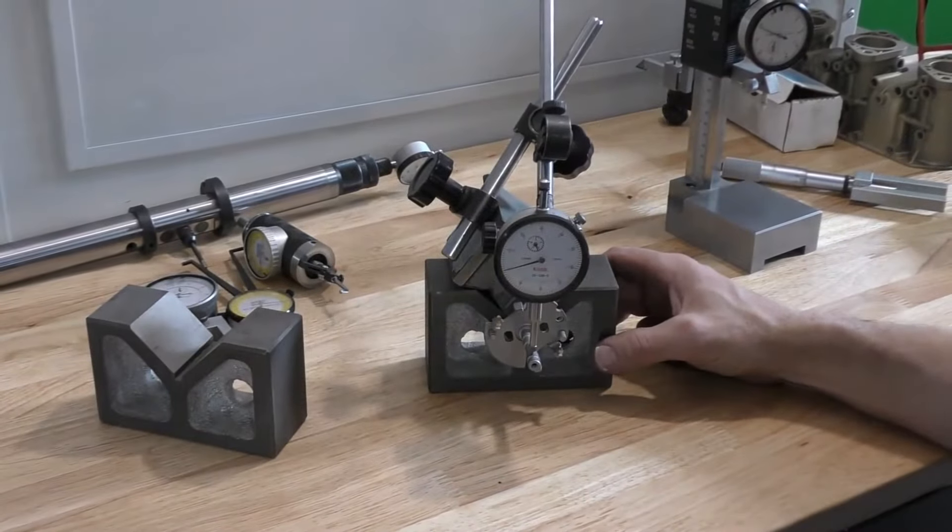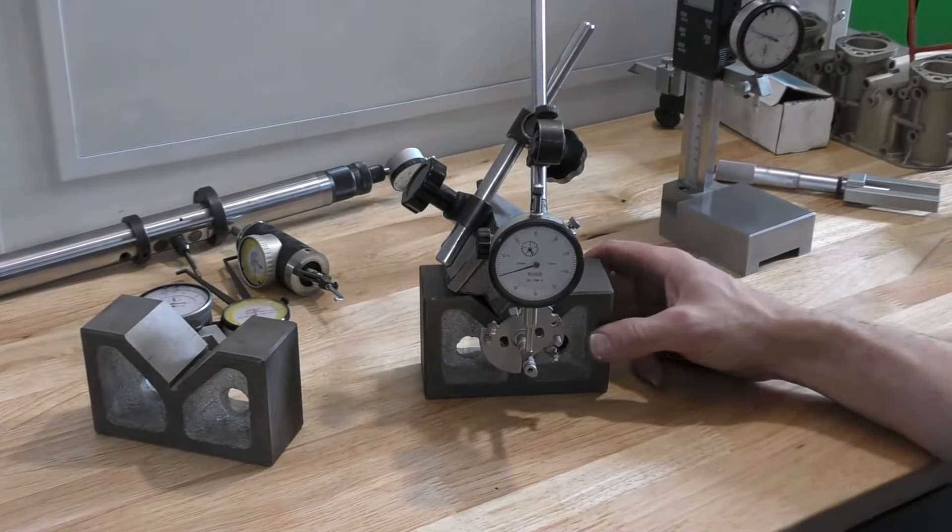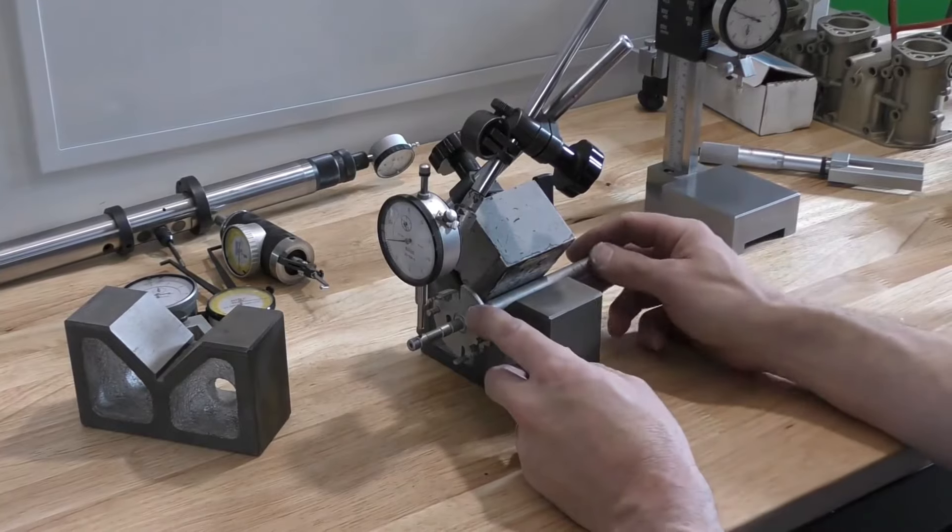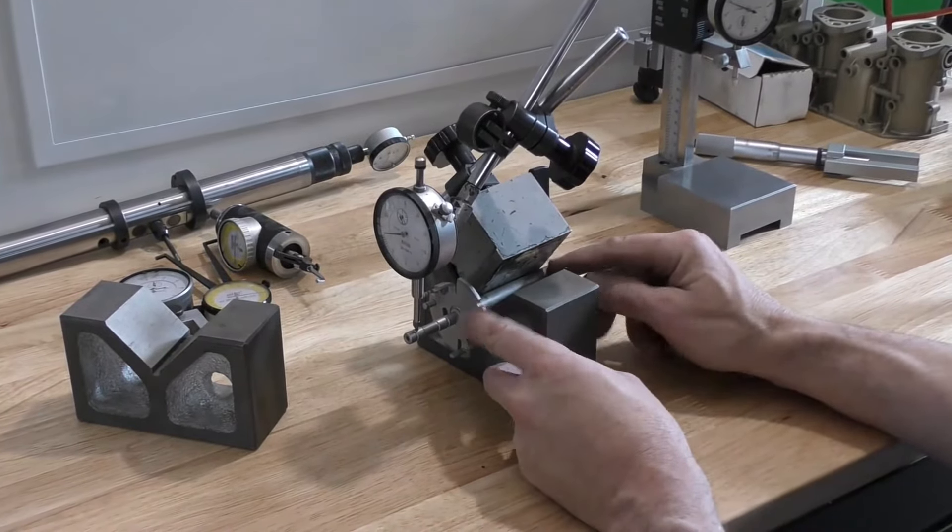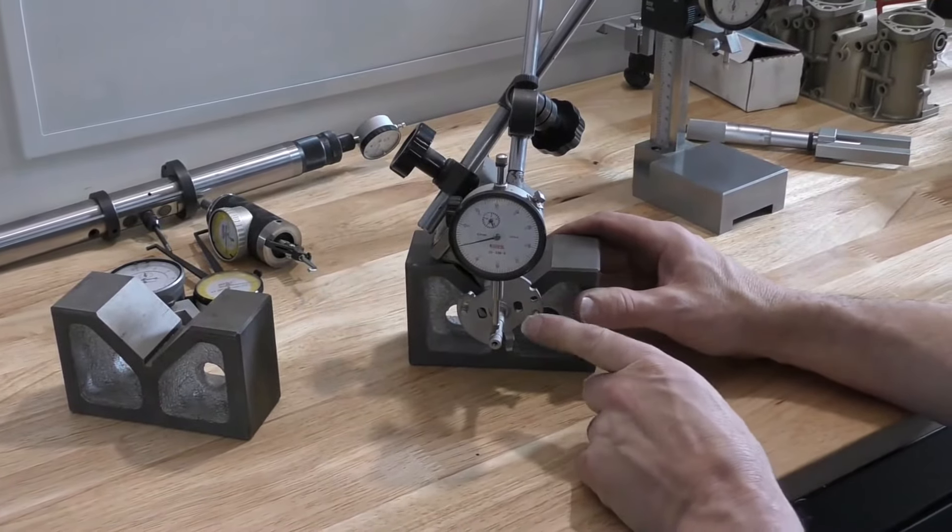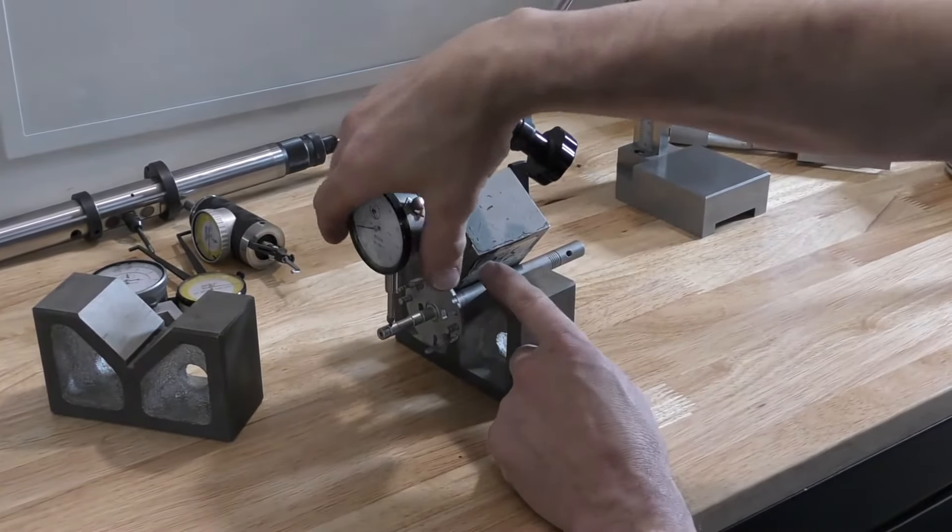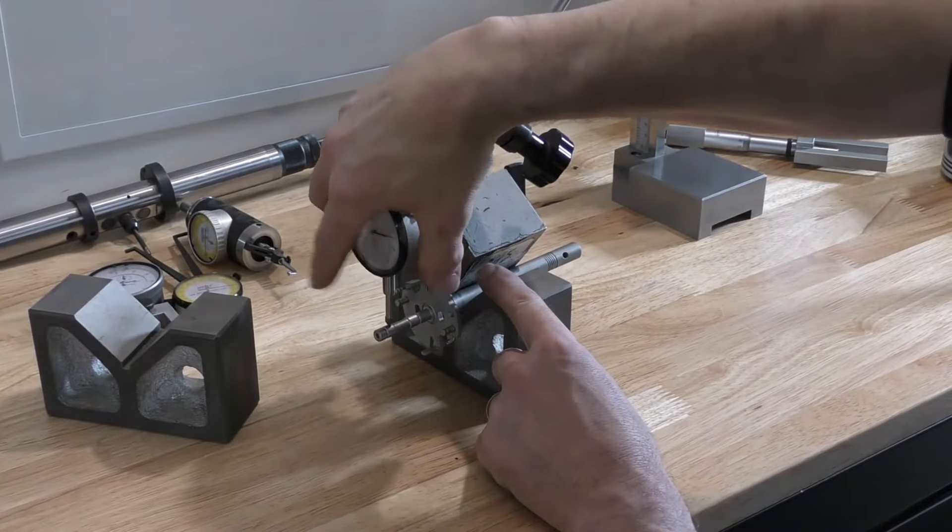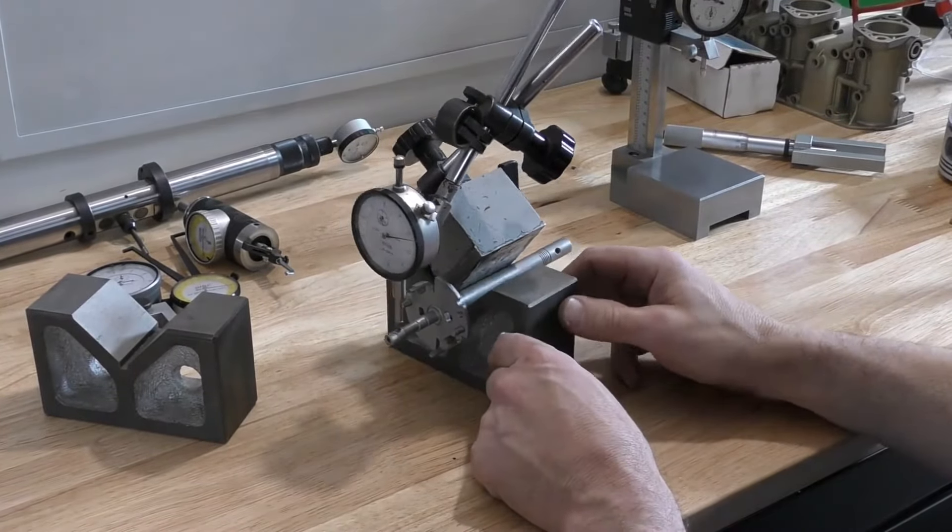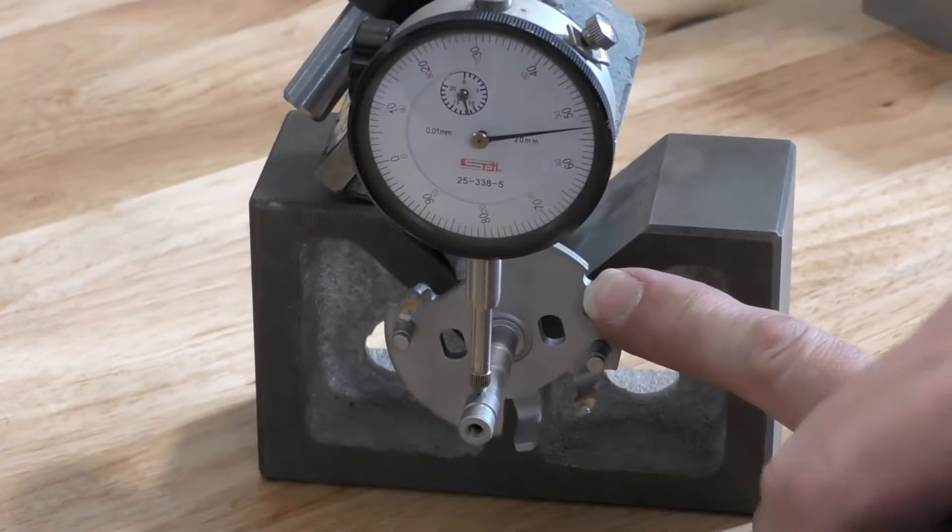Another of the most common uses for a dial gauge is measuring shaft runout or shaft bend. I've got a distributor shaft set up in a v-block and I'm using a magnetic base. The magnetic base is doubling as retainment for my shaft and I've got my dial gauge set up so I'm perpendicular to the shaft that I'm measuring. I want to be as close to 90 degrees as I possibly can to get the most accurate measurements.